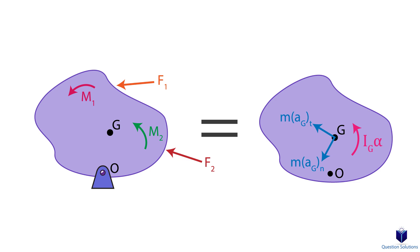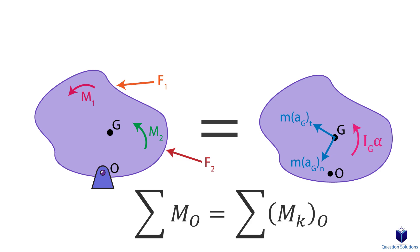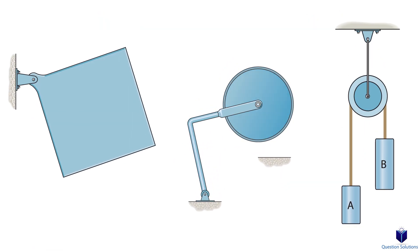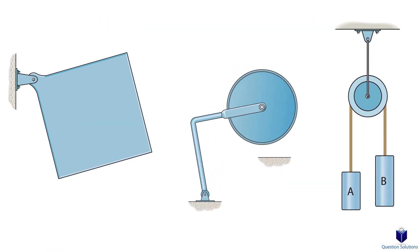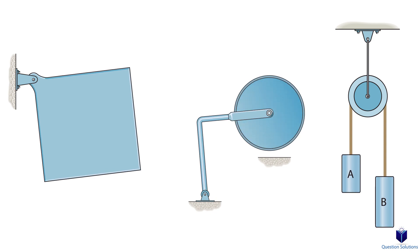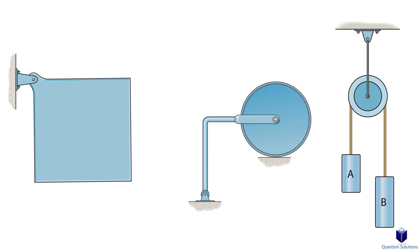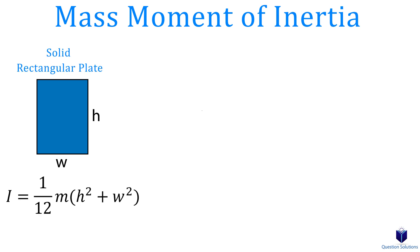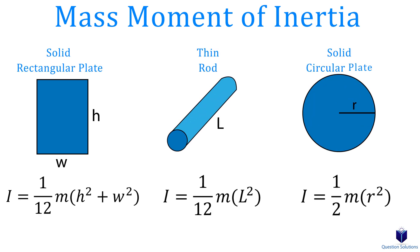When calculating the moment at point O, we use the free body diagram for the left side of the equation and the kinetic diagram for the right side. This will make much more sense through examples. One last thing: for some questions you need to remember the formulas for mass moment of inertia of different objects. Some common ones are shown here, but you can find many more online.